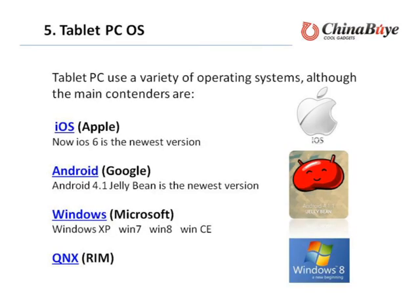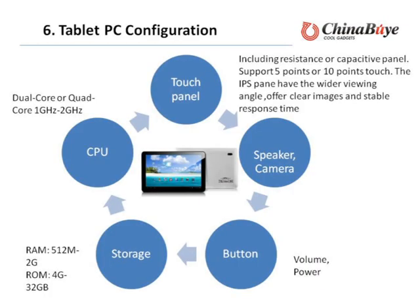Now let's go into the world of Tablet PC. When we buy a tablet, we can consider the following. First is the Tablet PC operating system. Tablet PCs use a variety of operating systems. The main ones are iOS — iOS 6 is the newest version — Android 4.1 Jelly Bean is the newest version, Windows XP, Windows 7, Windows 8, Windows CE, and QNX.